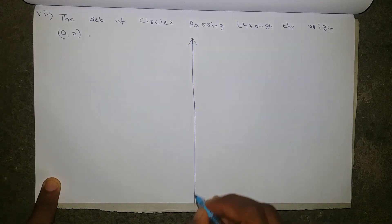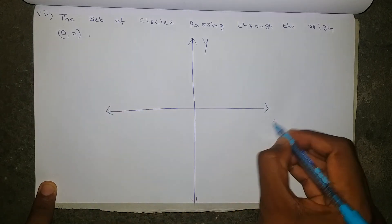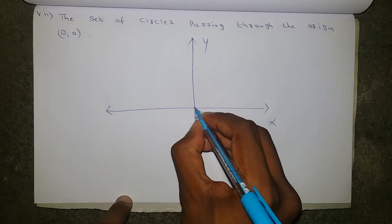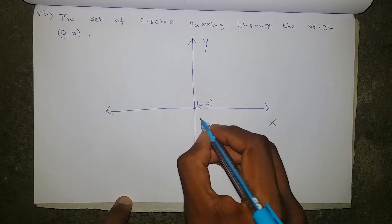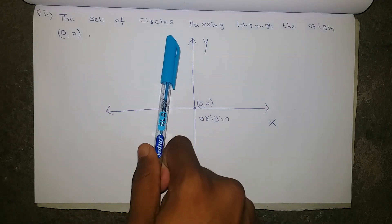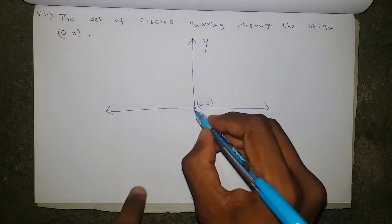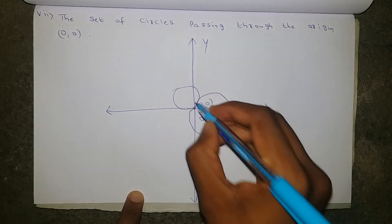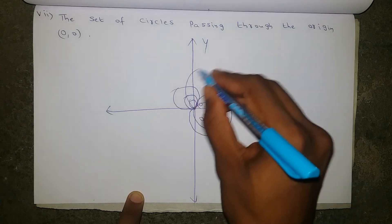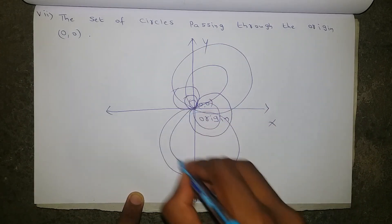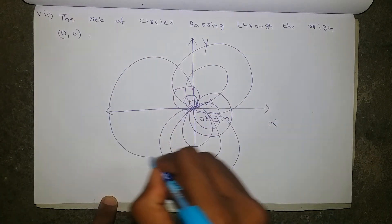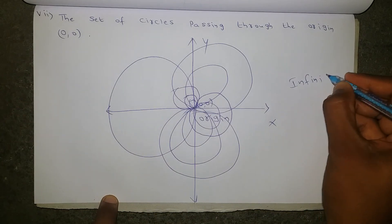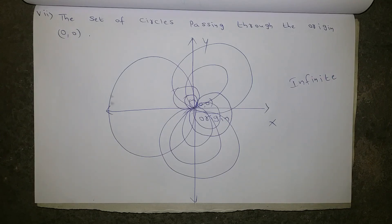Let us see the last question: the set of circles passing through the origin (0, 0). This is the y-axis and this is the x-axis, and where they touch each other is the origin (0, 0). We can draw one circle through the origin, then another, then another — if we keep on drawing like this, infinite number of circles can be drawn passing through the origin. So this is also an infinite set. If you haven't subscribed to my channel, please subscribe for more videos. Thank you.